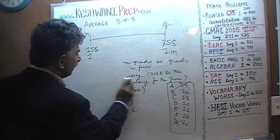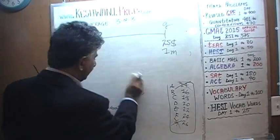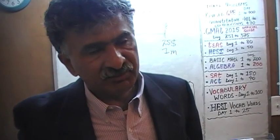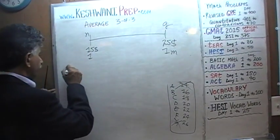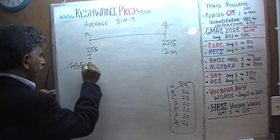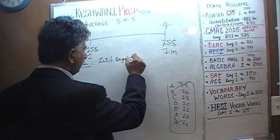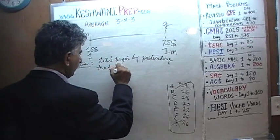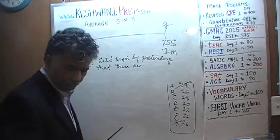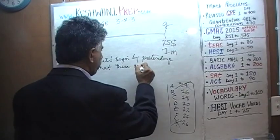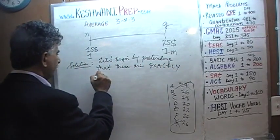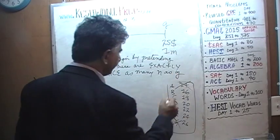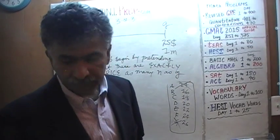Now let's begin our process. We'll start by assuming a simple scenario where there are exactly thrice as many non-graduates as graduates — even though the problem states more than thrice as many. In that case, since non-graduates have an average salary of $15,000 and there are three of them for every one graduate who makes $25,000, the overall average is: (15 × 3 + 25) ÷ 4.